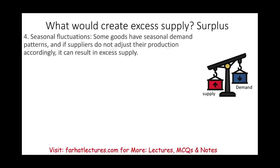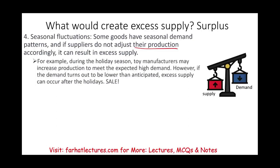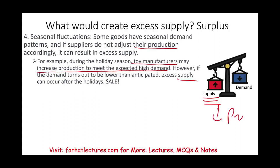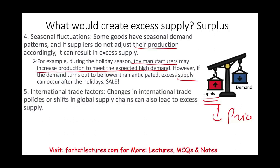What could also create a surplus? Seasonal fluctuations. Some goods have seasonal demand, and if suppliers don't adjust their production and keep producing all year long at the same rate, it will create a surplus. For example, during the holiday season, toy manufacturers may increase production to meet expected high demand. However, if the demand turns out to be lower than anticipated or they kept producing at the same level, they will have excess supply. What happens when you have excess supply? What happens after the holidays if they cannot sell something? They put it on sale — they have to lower the price.